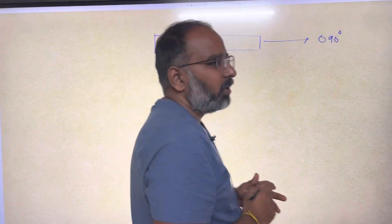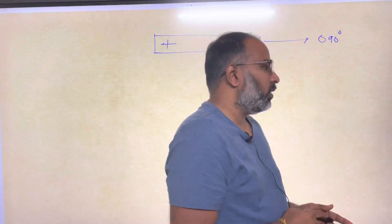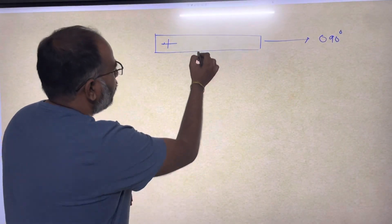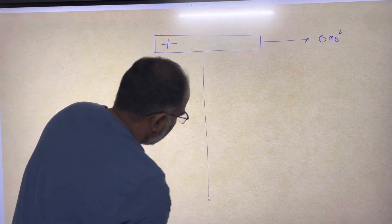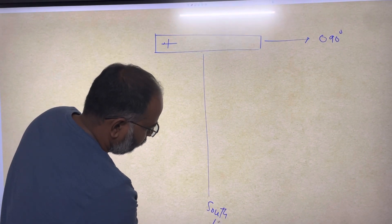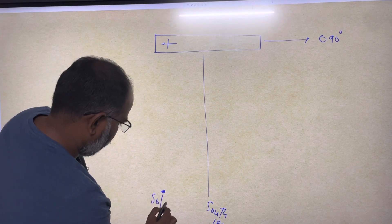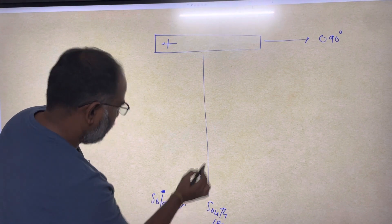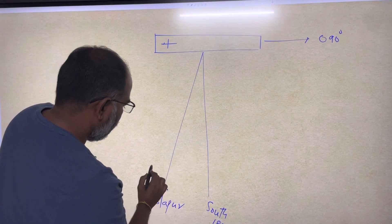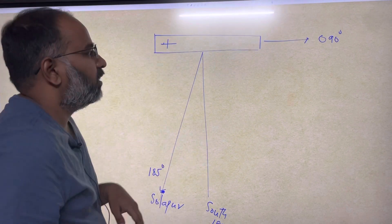When you are taking off, your heading is 090 degrees. Now departure clearance will be like this. When you ask Begum Bed tower that you are going to Solapur, depending on the traffic they will give departure clearance. Let's say this is your airport, and this is south or 180 degrees, and Solapur is here.